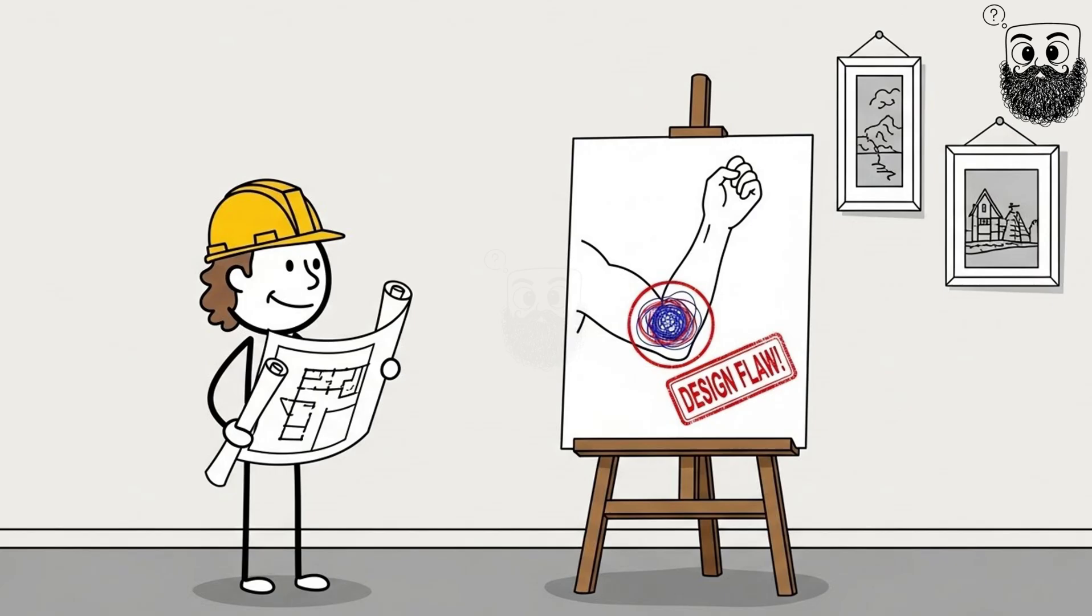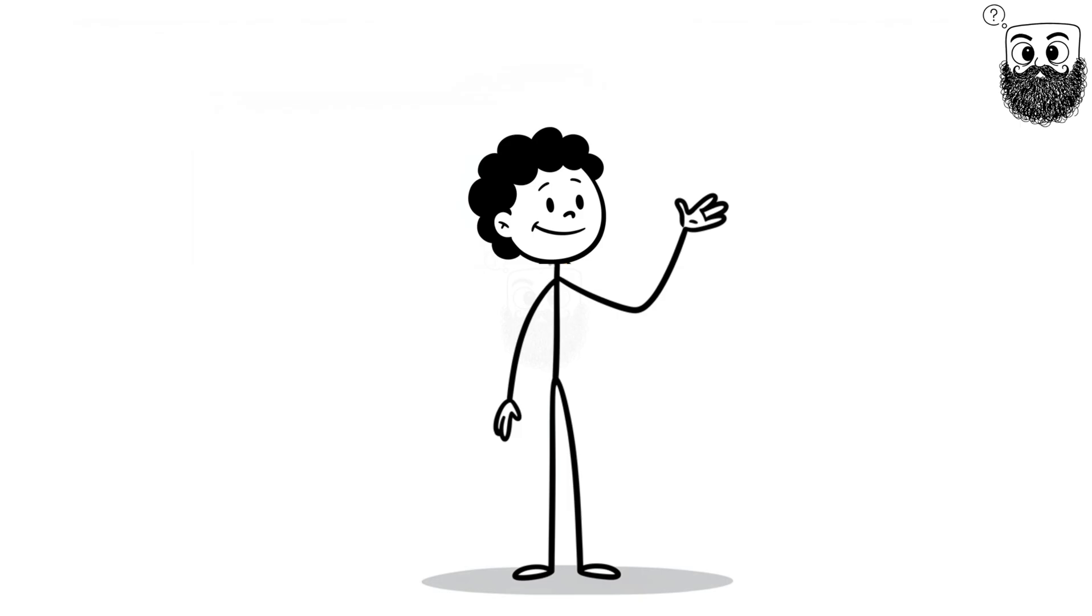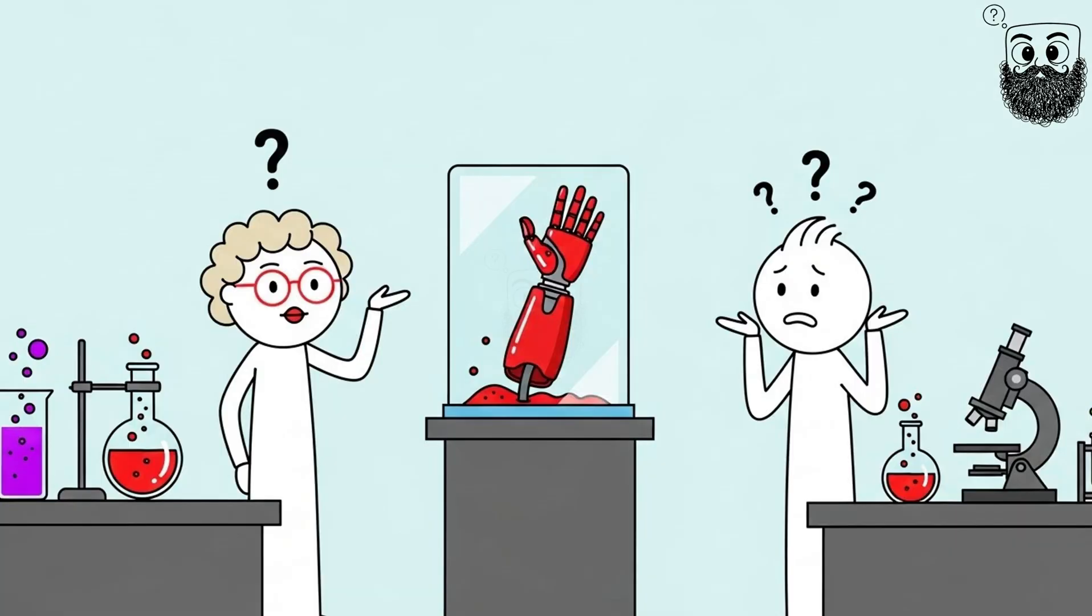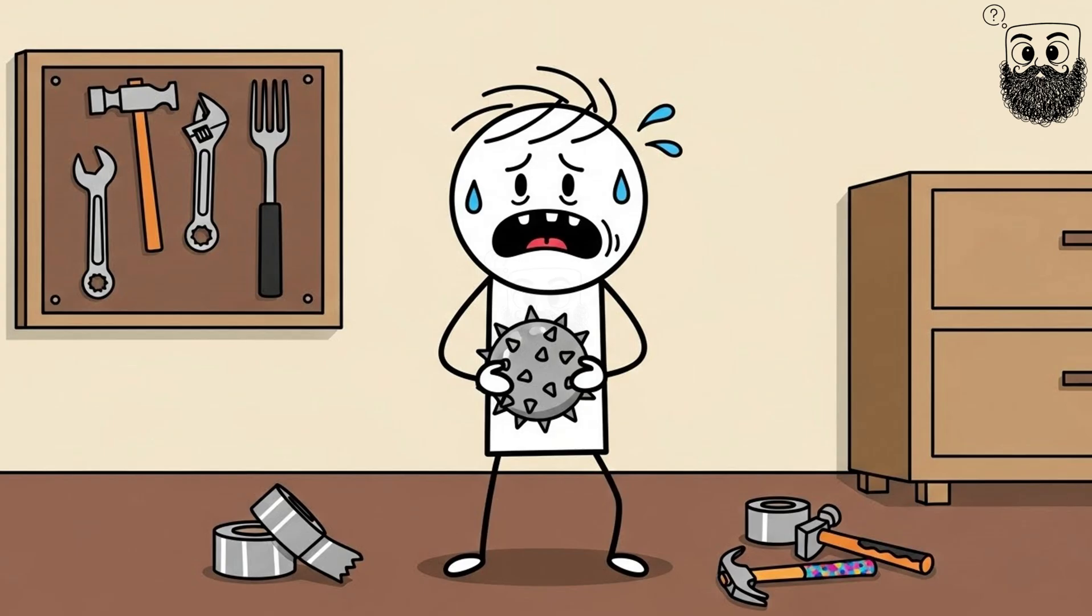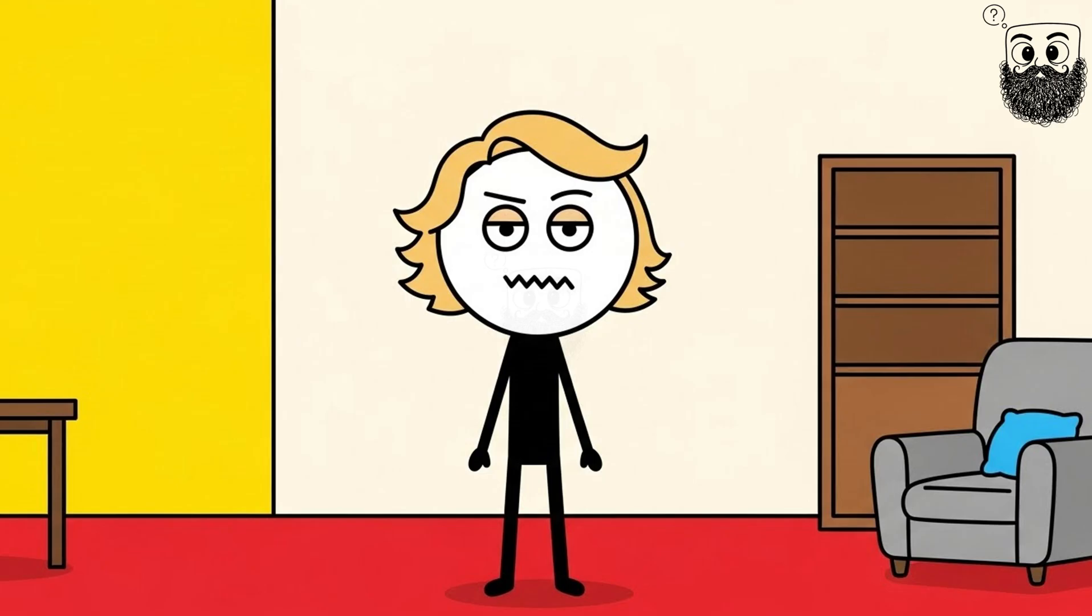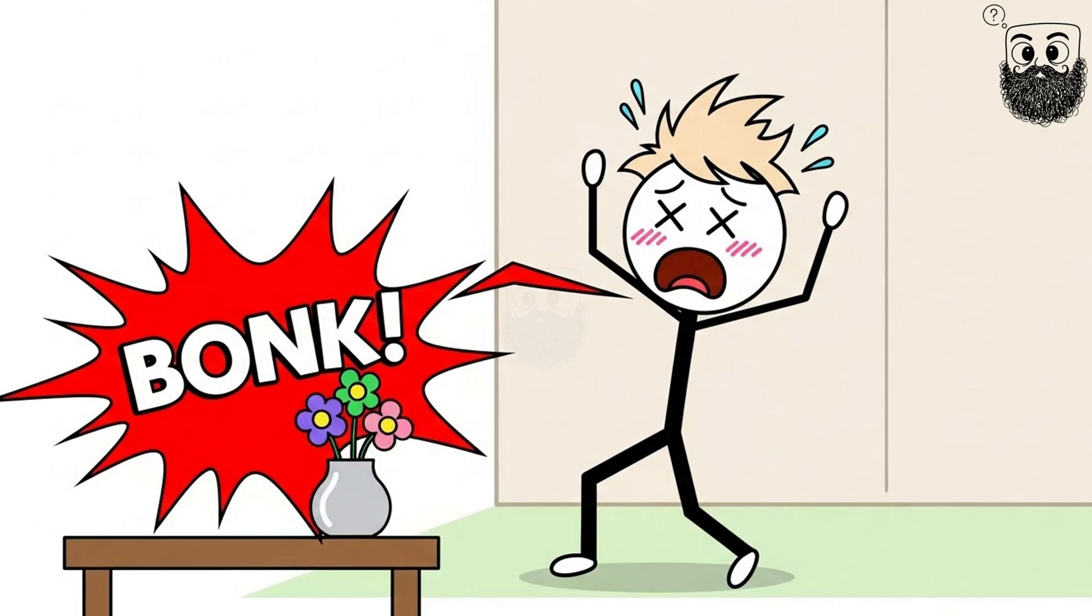It's a massive design flaw. Why would evolution put such a sensitive nerve in the most bump-prone spot on your body? Scientists have no clue. And here's the kicker. There's no fix for this. You can't get funny bone armor installed. Your only option is to just try not to hit it. And you're definitely going to hit it again.